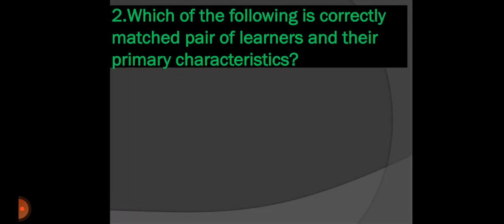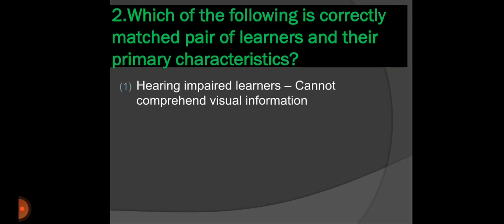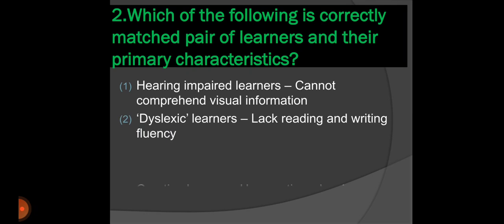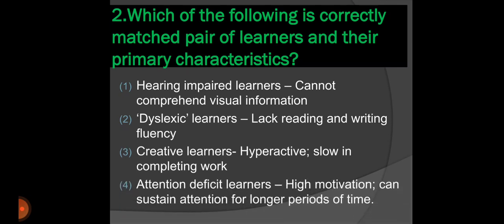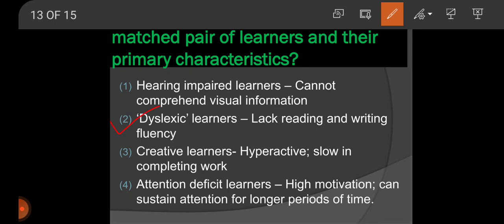And the next question. Which of the following is correctly matched pair of learners and their primary characters? Hearing impaired learners cannot comprehend visual information - this is not correctly paired. Dyslexic learners lack reading and writing fluency - yes, this is correctly paired. Creative learners, hyperactive, slow in completing work - not correctly matched. Attention deficit learners, high motivation, can sustain attention for longer periods of time - this is also not correctly matched. Because ADHD children, they cannot sustain attention for longer periods. The answer will be option 2.